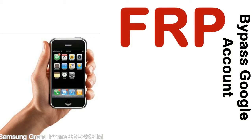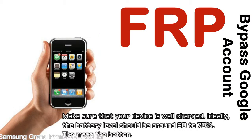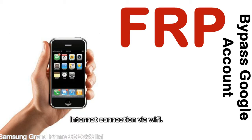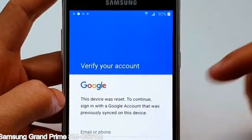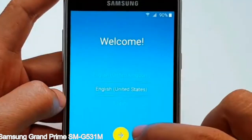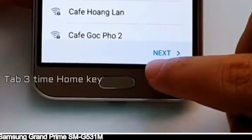Before starting: 1 — make sure that your device is well charged. Ideally, the battery level should be around 60 to 70%, the more the better. 2 — Internet connection via WiFi. Here is a step-by-step guide on how to bypass Google account on your Samsung Galaxy device.